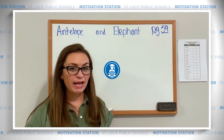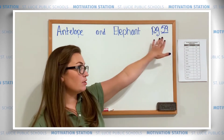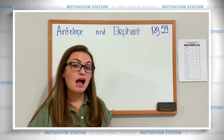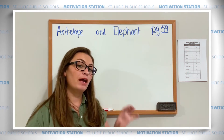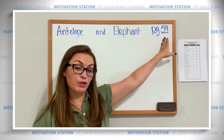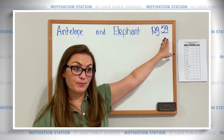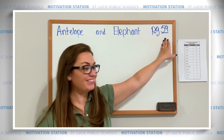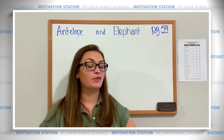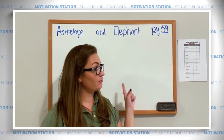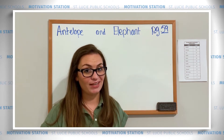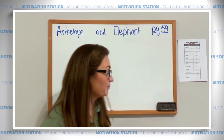For our animal speeds activity, make sure that you're on page 59. I'm going to show my work on the whiteboard and you can show yours on workspace book page 59. I have page 58 printed here so that I can look at it for my speeds, but you have it in your book. Let's get started.